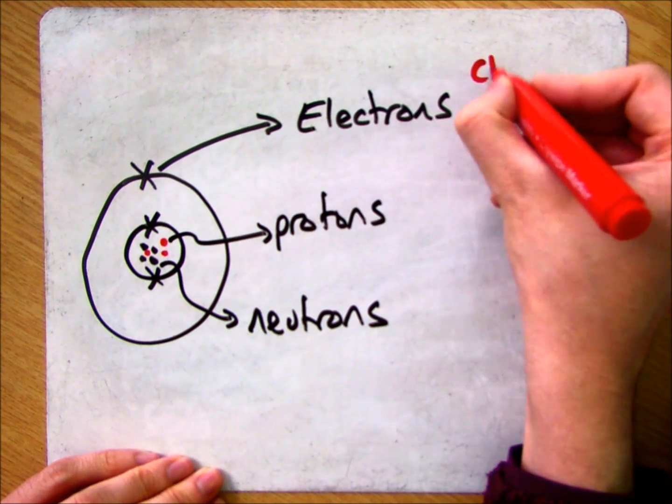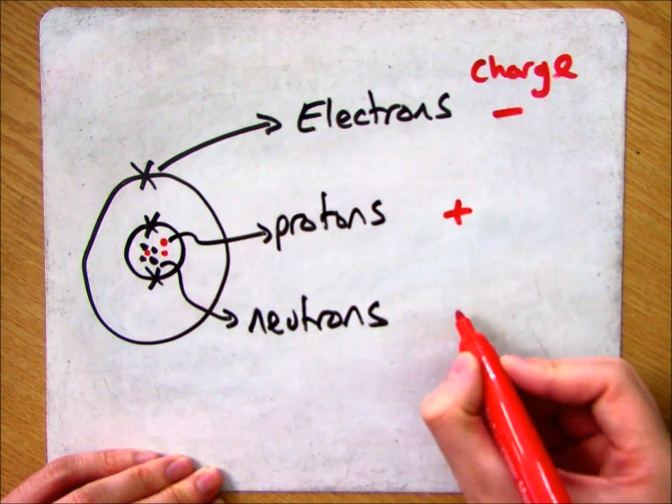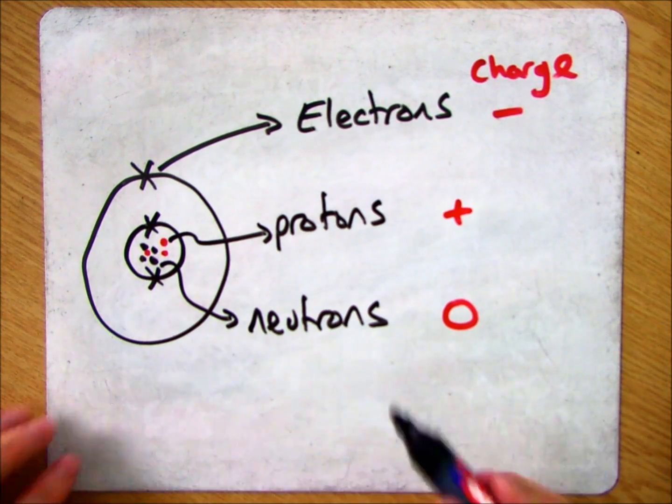So if we start off with the charge, for an electron you have a negative charge, protons are positive and neutrons are neutral. No charge.